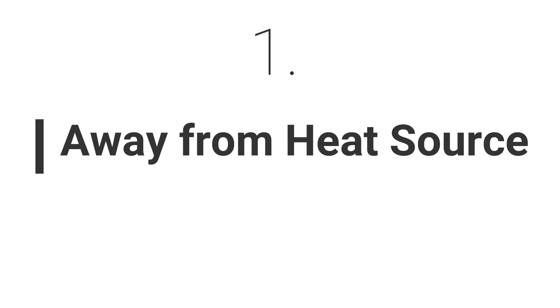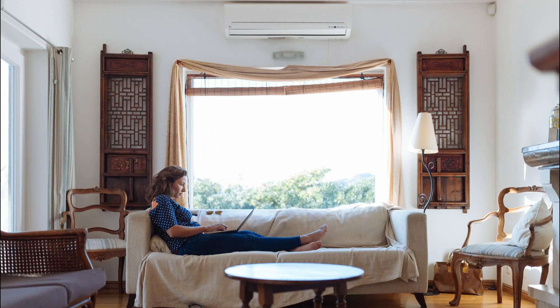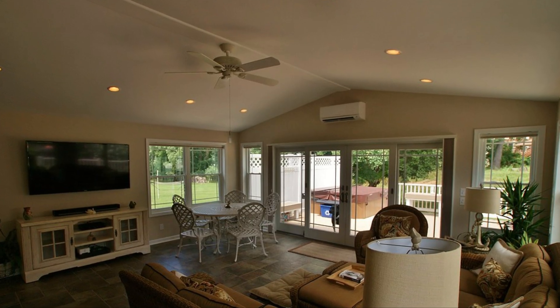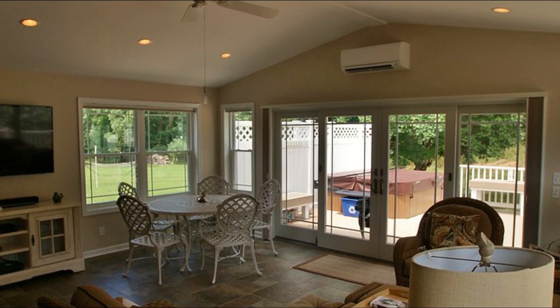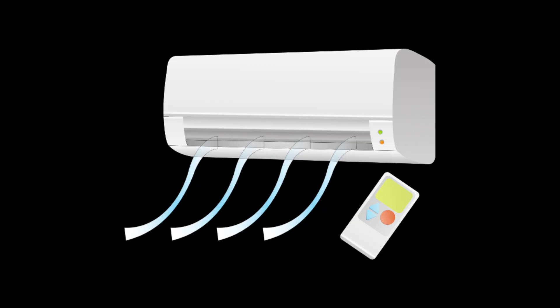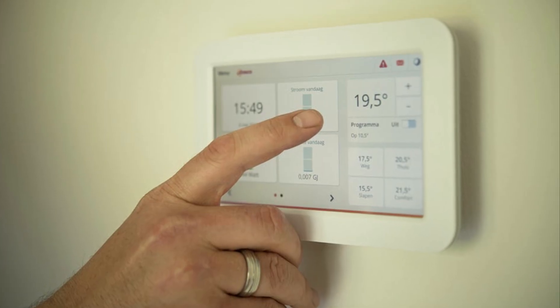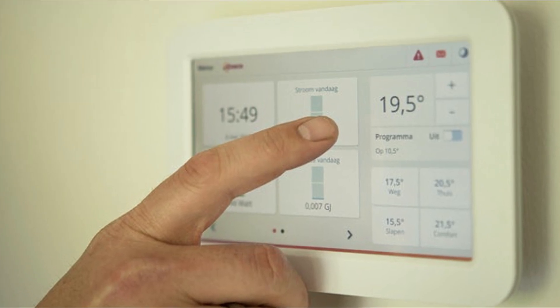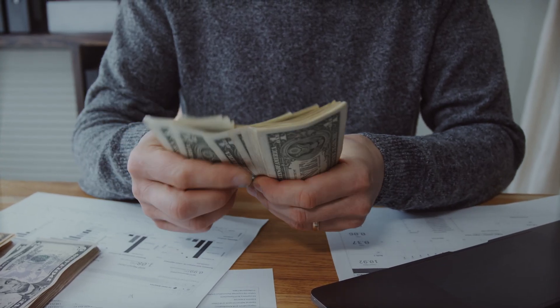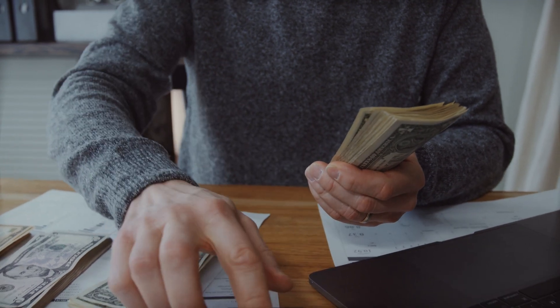Tip number one: install AC away from any heat source. If your air conditioner is installed near any heat source where the temperature is generally higher than the normal room temperature — like near the kitchen, near an exhaust, or near a window with direct sunlight — your AC sensor won't sense the correct room temperature and the cut-off mode will remain on, giving extra chilling effect and boosting your electricity bills.